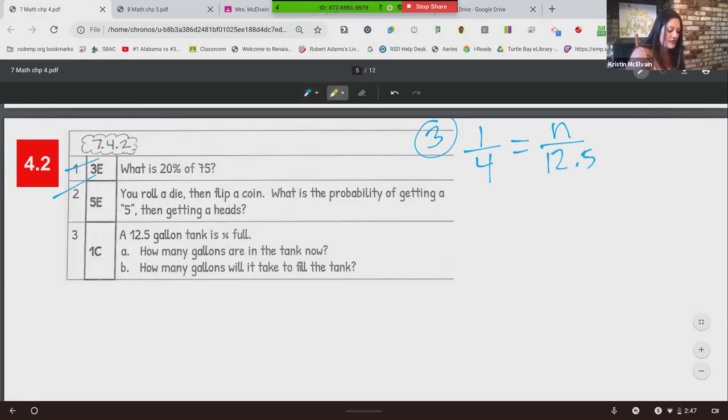So we have one out of four. So remember the top is the part, the bottom is the whole. So we want to know how much is that in a 12 and a half gallon tank. Cross multiply goes this way. So we're going to say 4N equals 12.5 times one. And now we're going to divide each by four. That's going to give us N. So 12.5 divided by four is 3.125. And what's our label? Gallons. So currently our tank has 3.125 gallons in it.